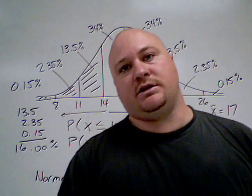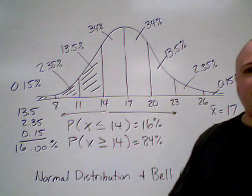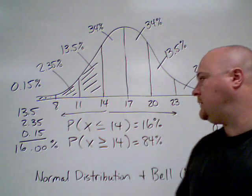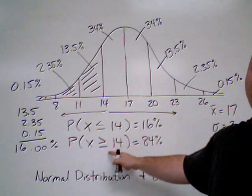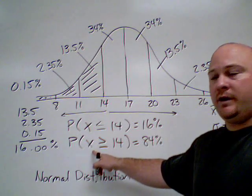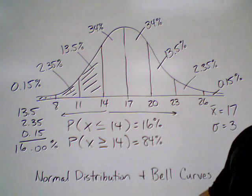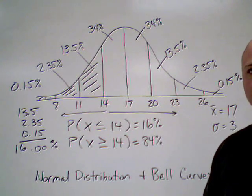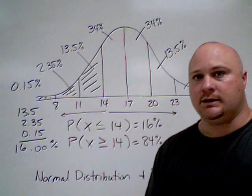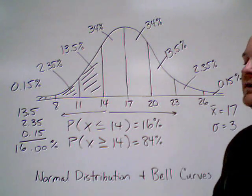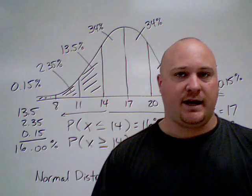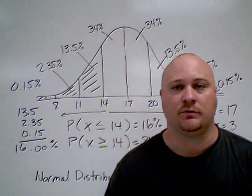Basically, the bell curve is just eight sections you have to deal with. You have to know the percentages in each section, and the tricky part is the probability notation — where you're picking a random data point and assigning it boundaries. Once you know where the boundaries are and how to define them, this becomes very easy. Hopefully this helps clear things up and gives you an example. If you have questions, feel free to shoot me an email.